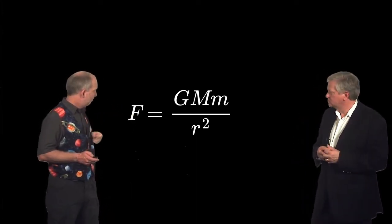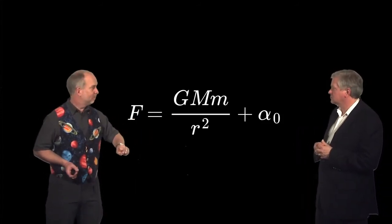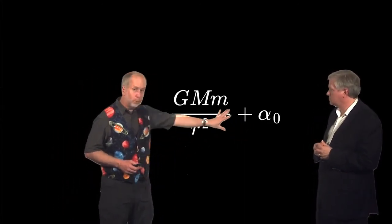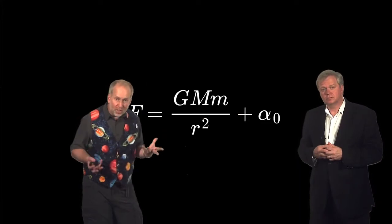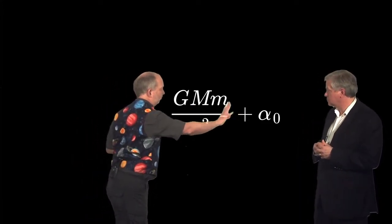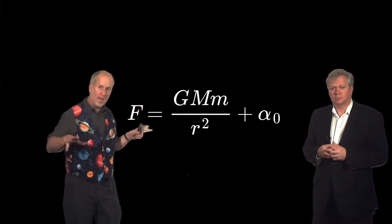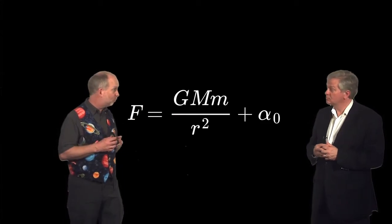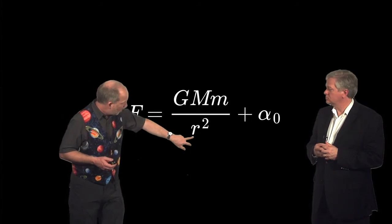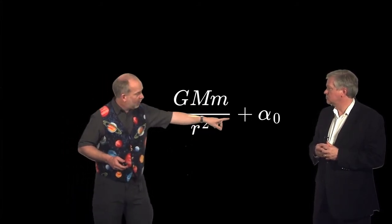Instead of force equals GMm over r-squared, we have GMm over r-squared plus a bit. Well, you want it to be pretty small. What that means is when you're close into a galaxy or a solar system or the Earth, this will be much bigger than that, so you can ignore that. It's only when you go far out where gravity is very weak and a long way out from any stars or galaxies in the outskirts of a cluster or a galaxy, exactly the places where we see evidence for dark matter, r gets very big, this whole term becomes very small, and this starts to dominate.